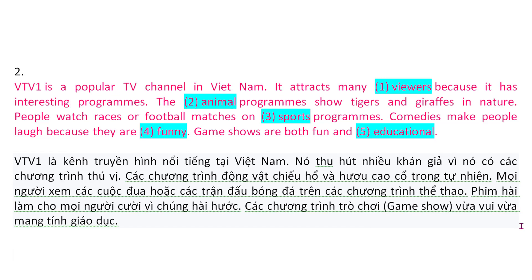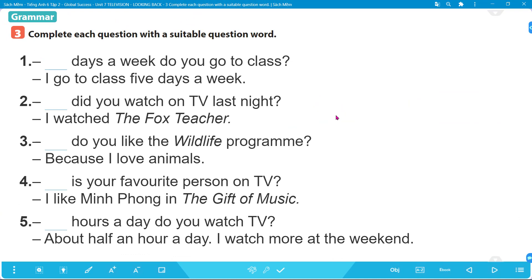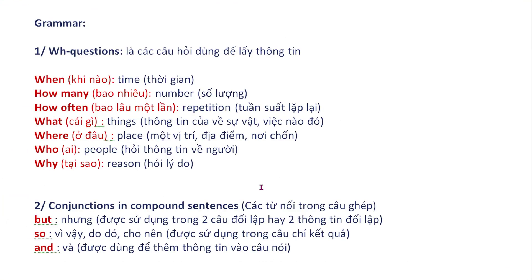Now the next section is Grammar. Trước khi chúng ta làm bài này, hãy ôn lại một số điểm ngữ pháp trong bài 7. The first one: WH-questions. We have 'when' - khi nào, hỏi về thời gian; 'how many' - bao nhiêu, hỏi về số lượng; 'how often' - bao lâu một lần, hỏi về tần suất lặp lại; 'what' - cái gì, hỏi về sự vật hay sự việc; 'where' - ở đâu, hỏi về vị trí địa điểm.